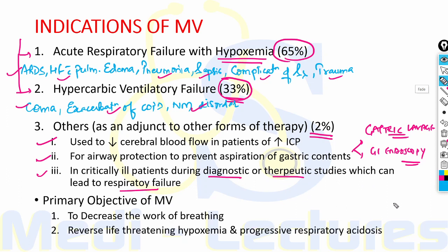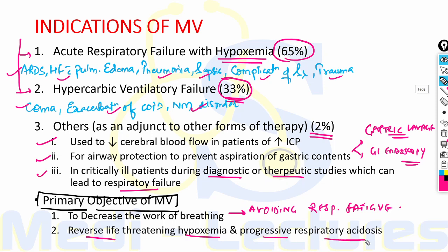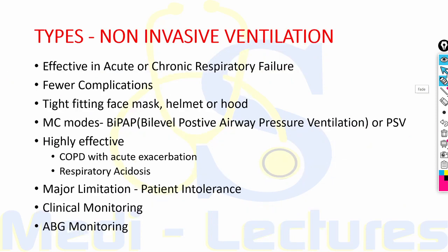The primary objectives of mechanical ventilation are to decrease the work of breathing, thereby avoiding respiratory fatigue, and secondly to reverse life-threatening hypoxemia and progressive respiratory acidosis. After discussing indications and objectives, we now come to the types of mechanical ventilation, which are mainly non-invasive ventilation and conventional mechanical ventilation.